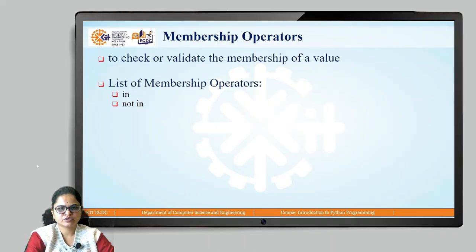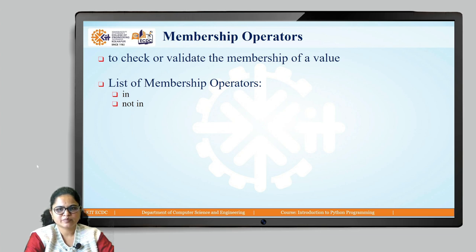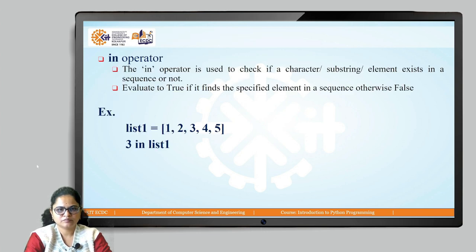The next type of operator is the membership operator, which is used to check or validate the membership of a value — meaning we check whether a particular value or element is present in a given sequence or not. There are two types of membership operators: 'in' and 'not in'. The 'in' operator checks whether a given character, substring, or element exists in a sequence. It evaluates to true if it finds the specified element, otherwise it results in false.